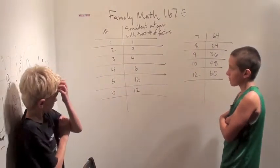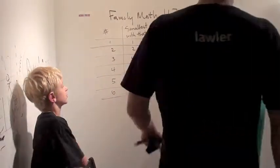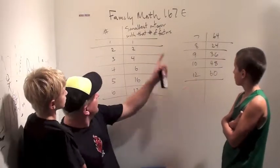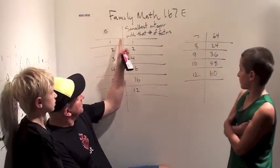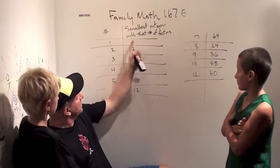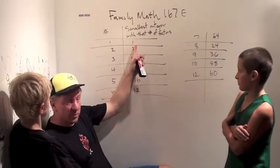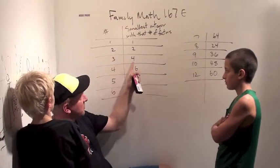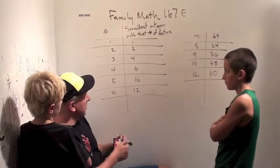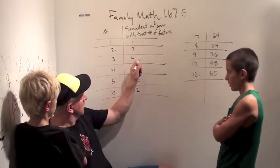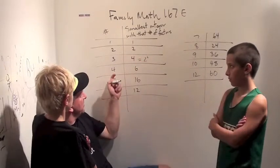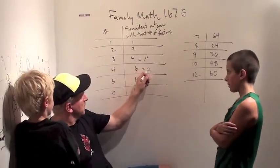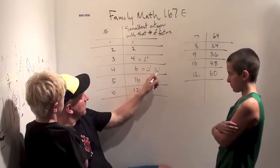So now, with the list we just made, we have a nice little list, and I added one to the list. The smallest integer with one factor is just one. Two factors: two. Three factors: four — and how can we write four as a product of primes? It's two squared. The smallest integer with four factors is six, which is two times three, or two to the one times three to the one.